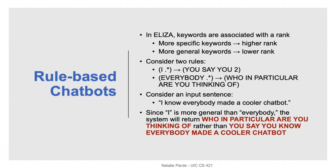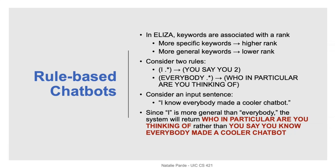In ELIZA, there are enough different patterns that an input might sometimes match multiple patterns, so the program must decide which transformation to apply. It solves this by ranking rules based on how specific or general their keywords are. For example, if one rule matches 'I' followed by anything, and another matches 'everybody' followed by anything, 'everybody' is more specific and thus higher ranked. So if a user says 'I know everybody made a cooler chatbot,' ELIZA applies the 'everybody' rule and outputs 'who in particular are you thinking of?'